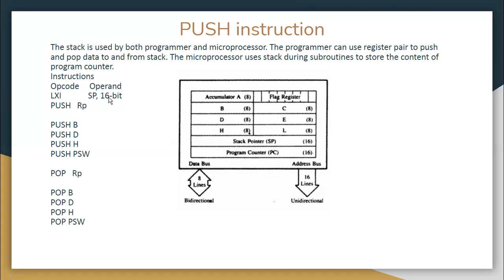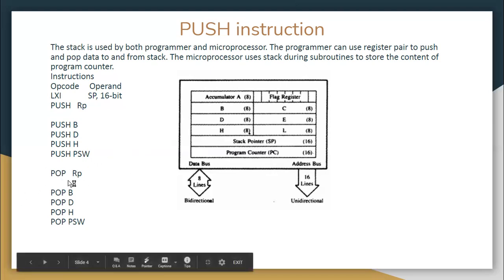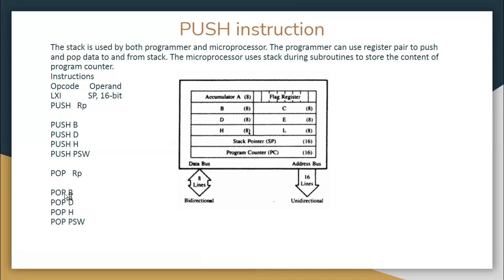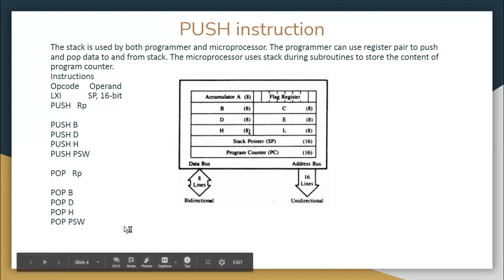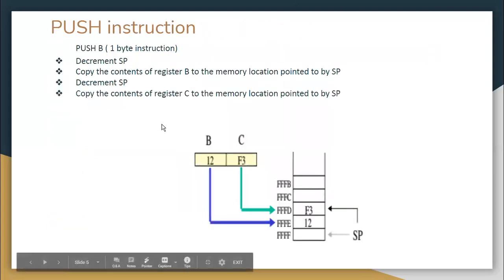First, initialize the stack pointer with a 16-bit memory location. Then use PUSH RP, where RP is the register pair. You can use PUSH B — both B and C will be pushed; PUSH D — D and E; PUSH H — H and L; and PUSH PSW, which is the program status word — the accumulator along with the flag register. Similarly, POP RP covers POP B, POP D, POP H, and POP PSW.